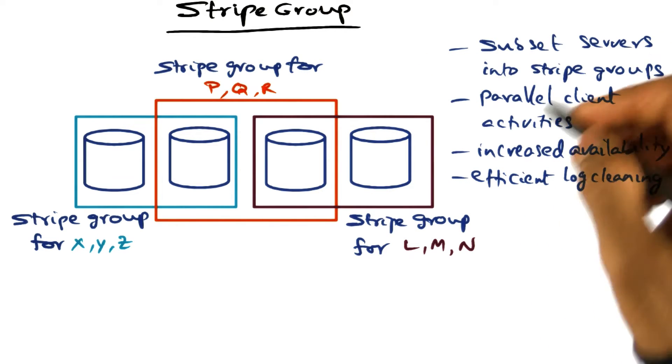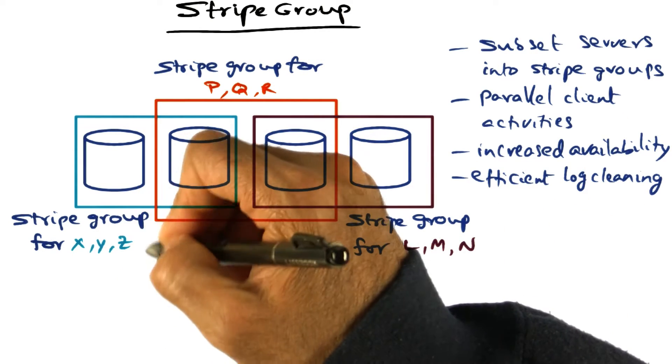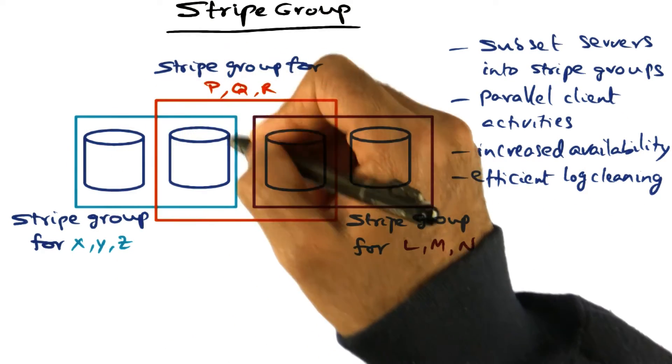So we're substituting the servers into these stripe groups, and what that allows is parallel client activities. If the log segments X, Y, and Z belong to a particular client,